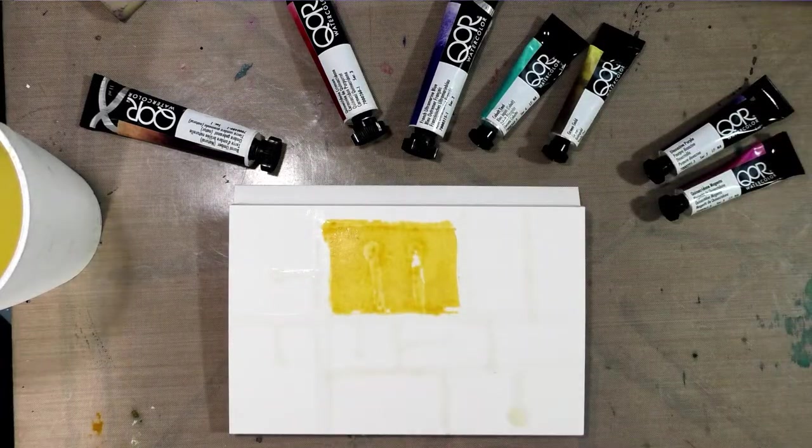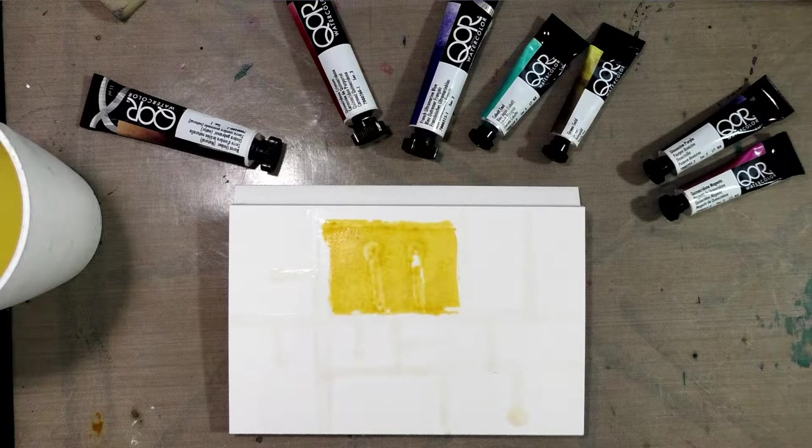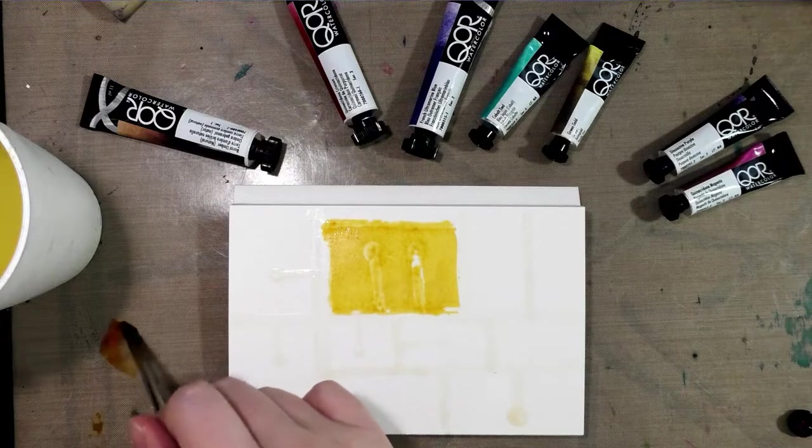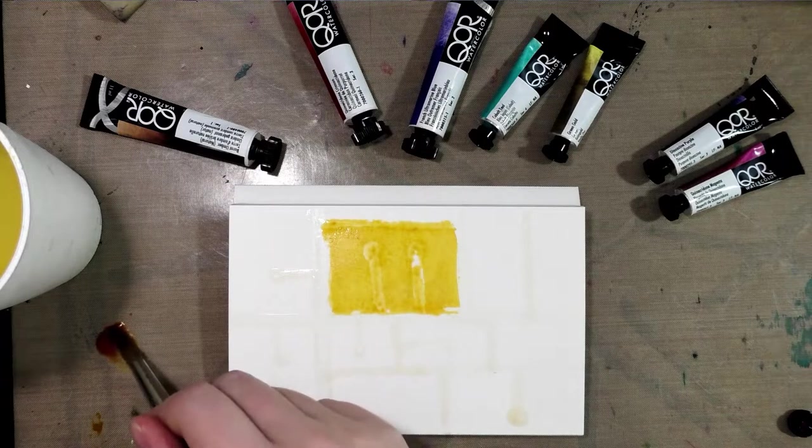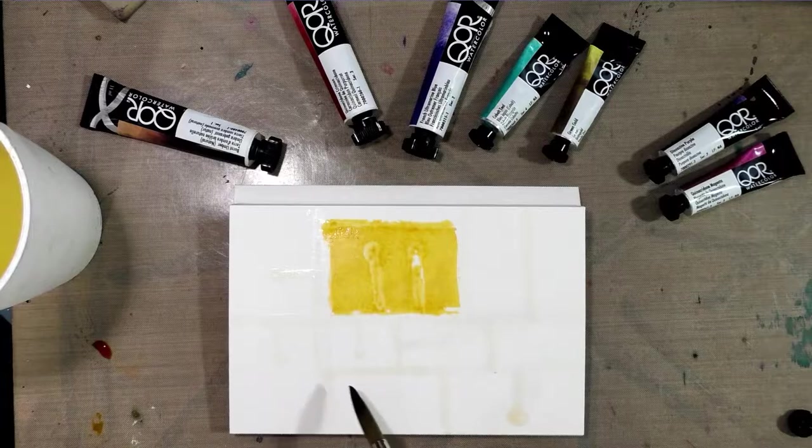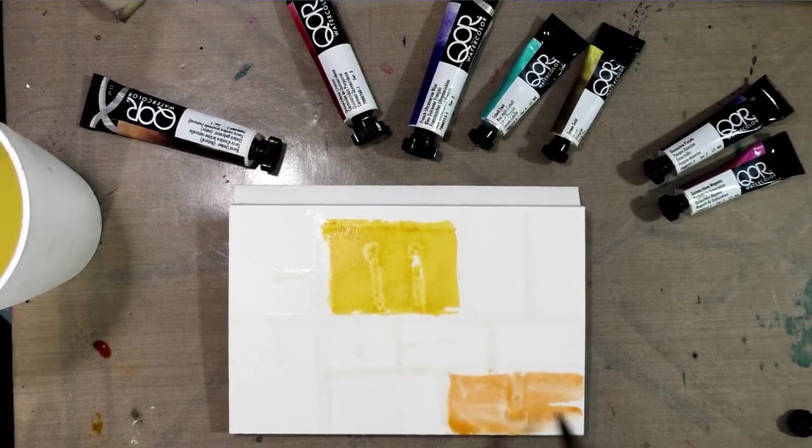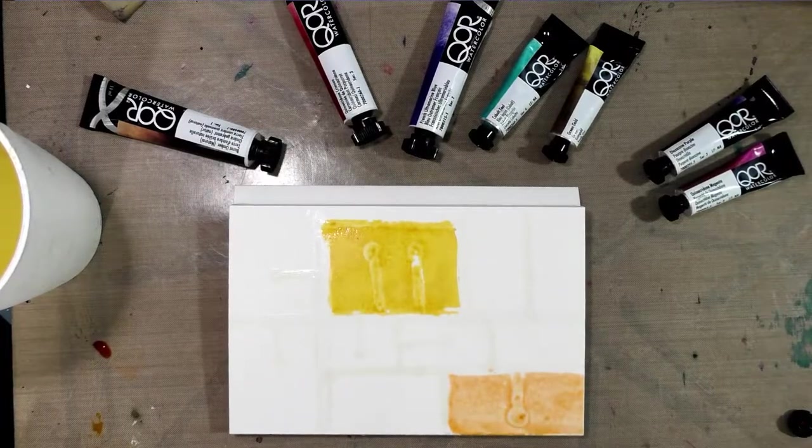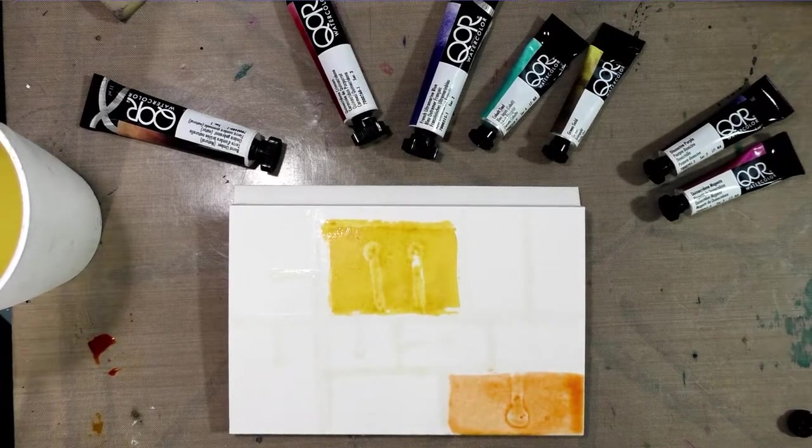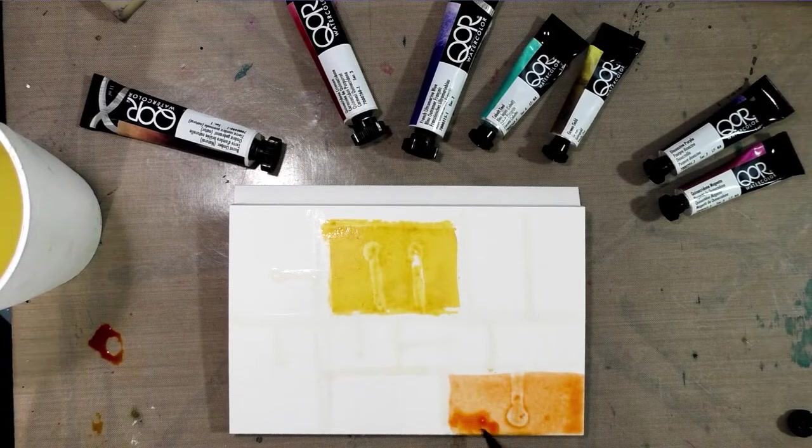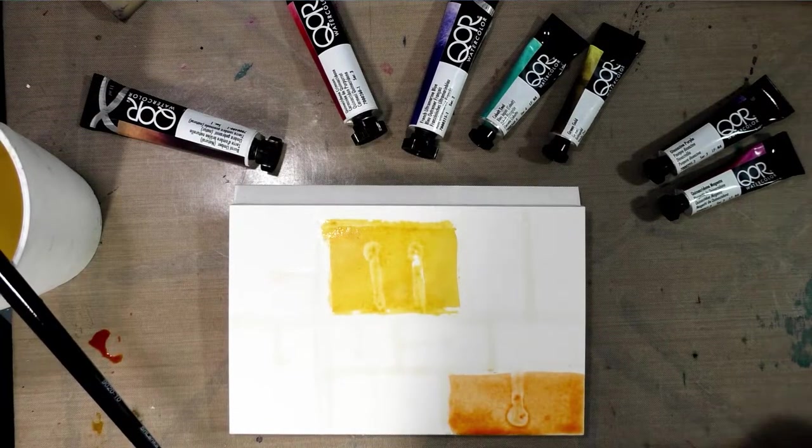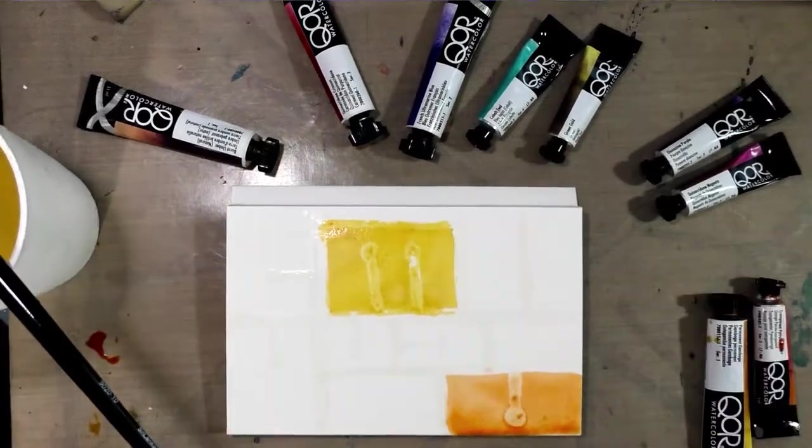Even add some a little more thickly mixed, so we get a more saturated color. And to give that a chance to dry, I'm going to go ahead and move over to a non-adjacent square with transparent pyrrole orange. Do the same thing with this.